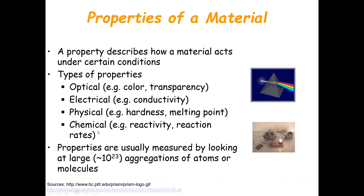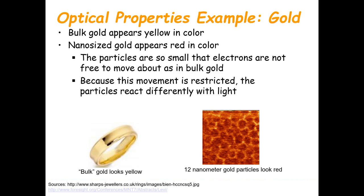Along with optical, electrical, physical, and chemical properties, we have many other properties that we can discuss in more detail given time. For a good example of optical properties, consider the material gold. Bulk gold is very yellow in color, as you can see here — when it is not in the nanoscale range, it looks yellow.